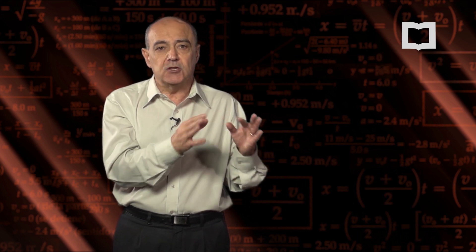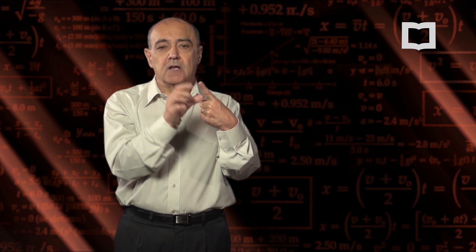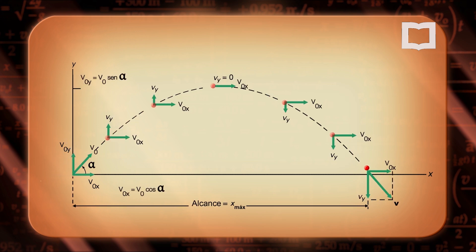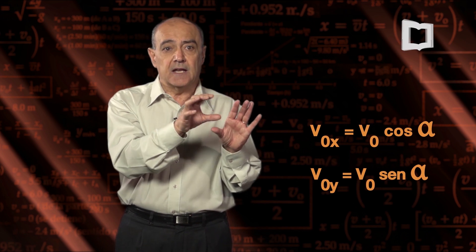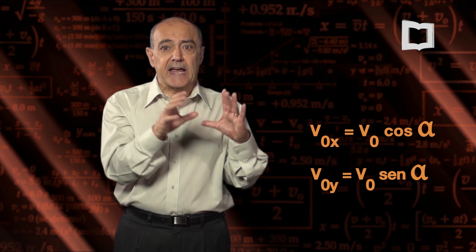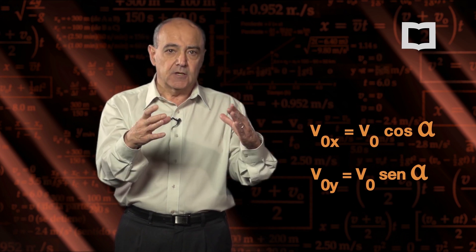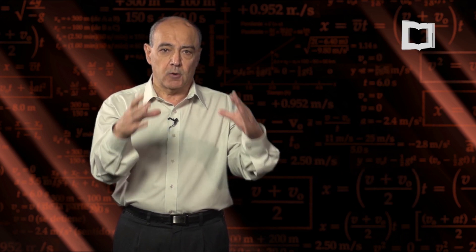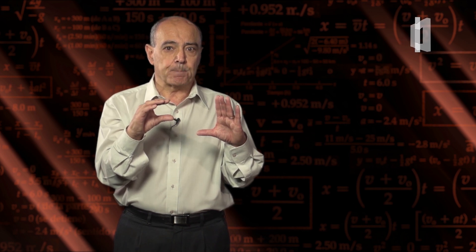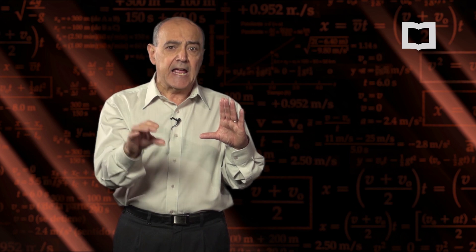La velocidad inicial, en el ejemplo que estamos viendo, se lanza con cierta inclinación: tiene un valor absoluto que llamamos V₀ y una orientación denominada con un ángulo alfa, que es el ángulo que forma la dirección inicial de la velocidad con el eje horizontal. Asimismo, el tiempo es una magnitud escalar que también requiere elegir un sistema de referencia.